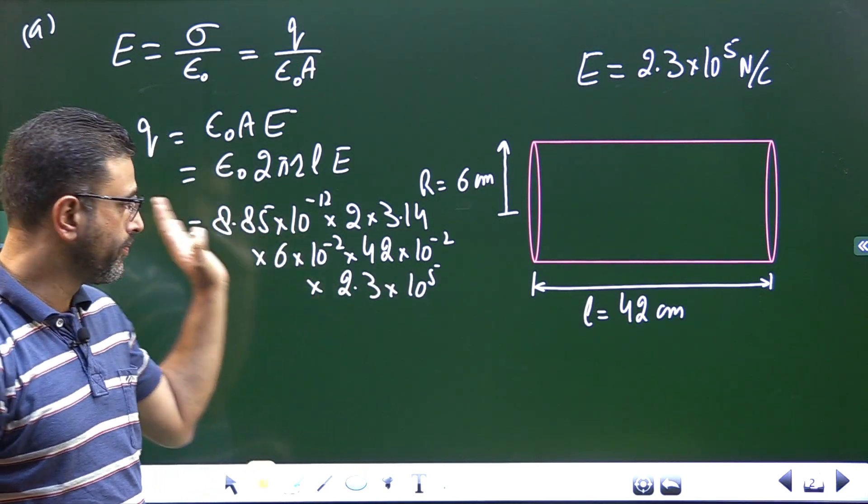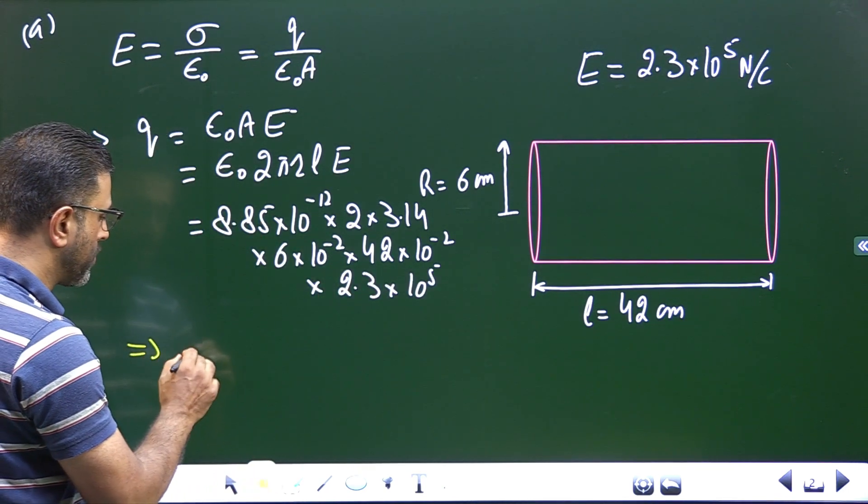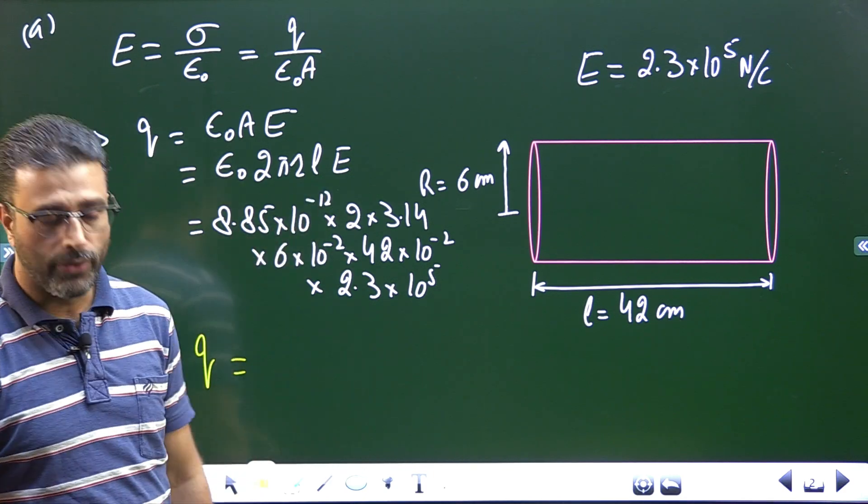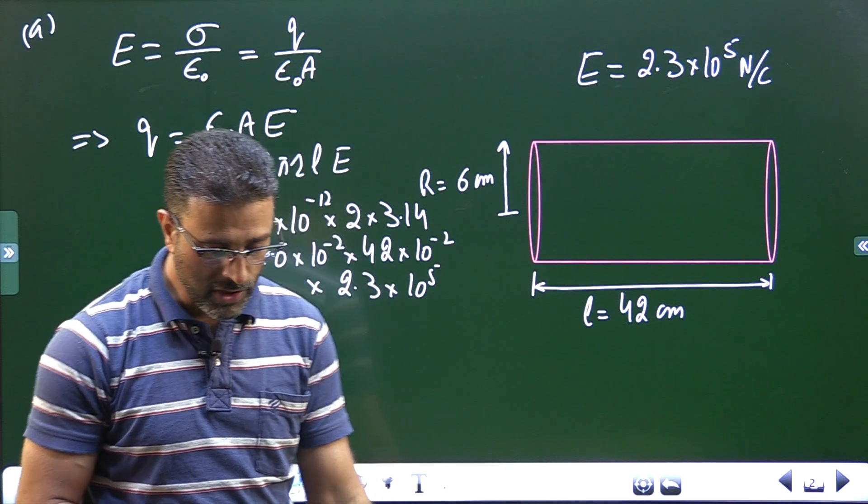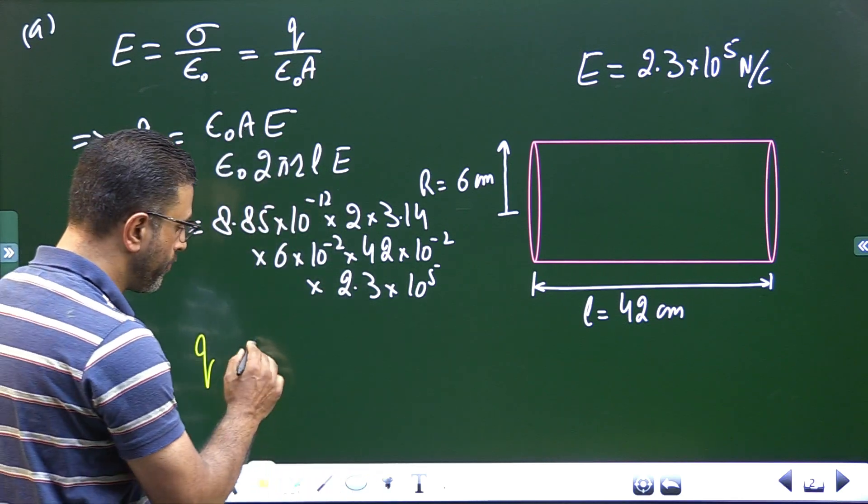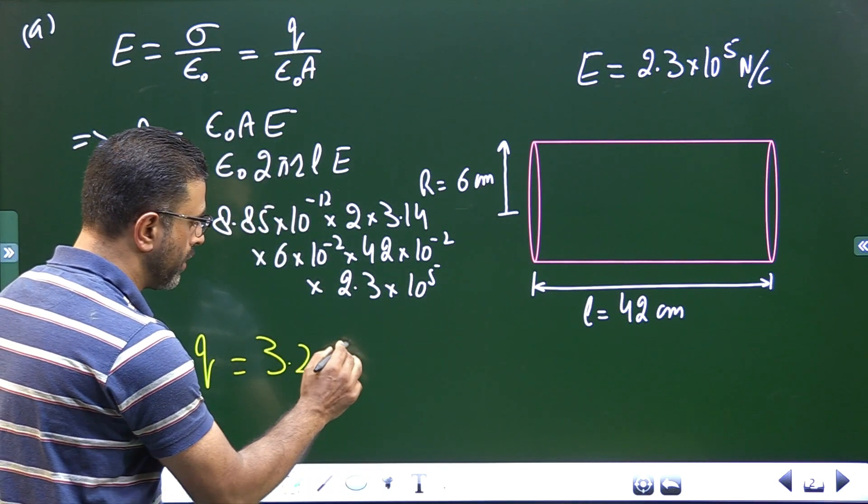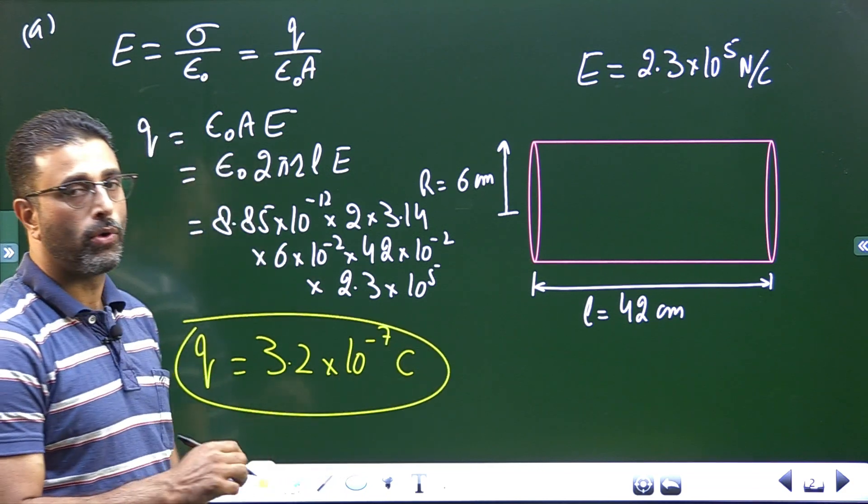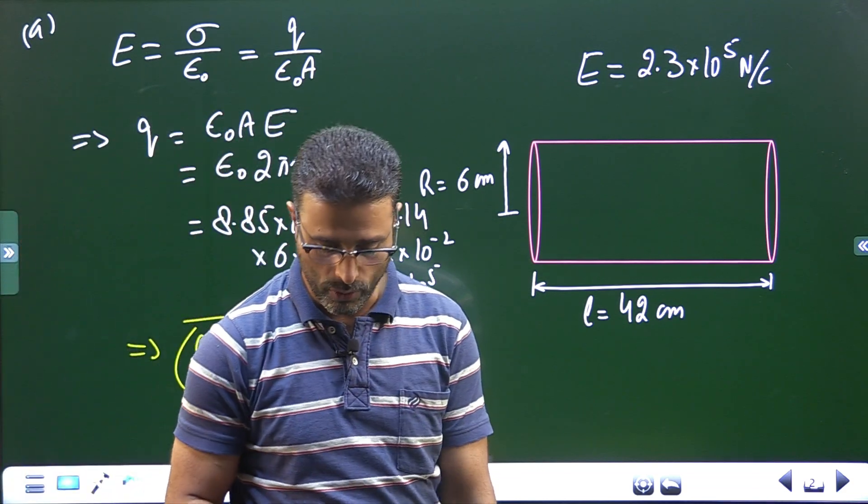We have used everything in SI system, so the charge we'll get will also be in SI system, meaning in Coulombs. So this is what you have to work out. I have already done that, it comes out to be 3.2 × 10^-7 Coulomb.